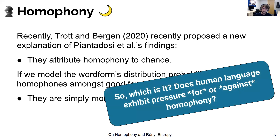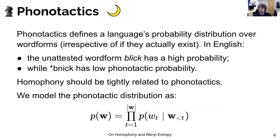So the question we're trying to answer here is: does human language exhibit a pressure for or against homophony, or neither? To talk about this, we'll need to define phonotactics, which is a language's probability distribution over word forms. The classic example in English is that the unattested word form 'blick' has a high phonotactic probability — so even though it doesn't exist, it sounds natural in English. On the other hand, the word 'panic' has a low phonotactic probability; it doesn't sound natural in English, and even though all its phones are present in English, the way they combine sounds like a foreign word.